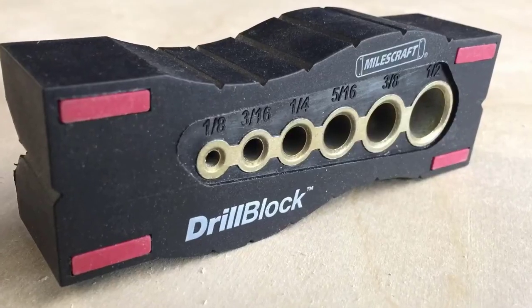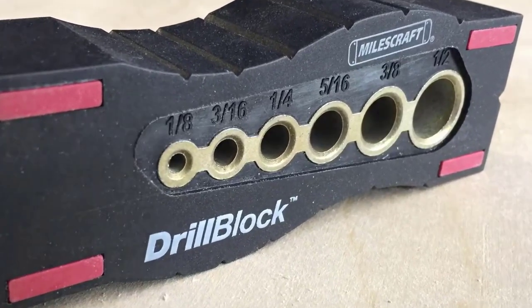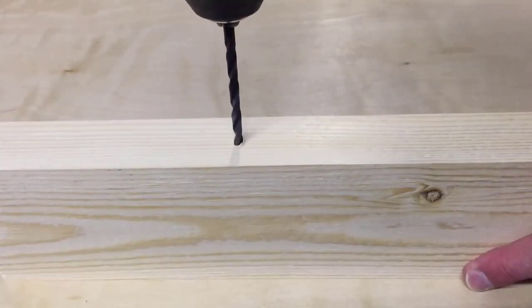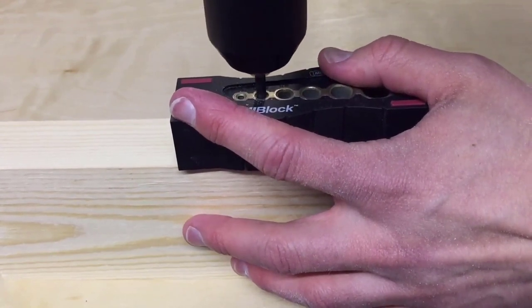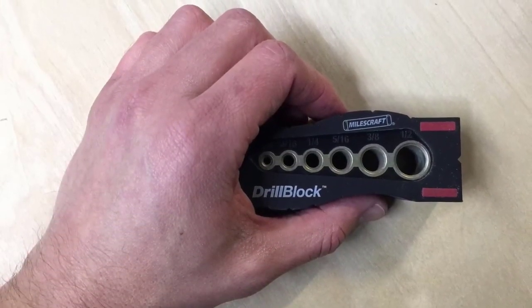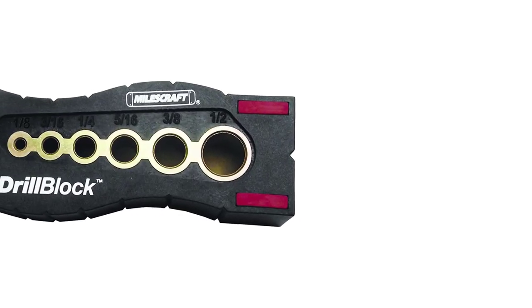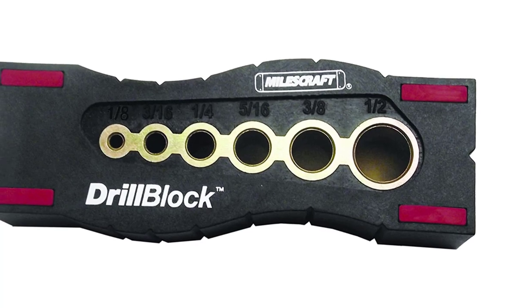Number 4. Milescraft Standard Drill Block Drilling Guide. The Milescraft Standard Drill Block Drilling Guide is a compact, simple and easy-to-carry drill guide that can be used with a large range of high-speed steel drill bits. It has the ability and capacity to offer 6 different drill diameters: one-eighth, three-sixteenths, one-fourth, five-sixteenths, three-eighths and one-half inch.